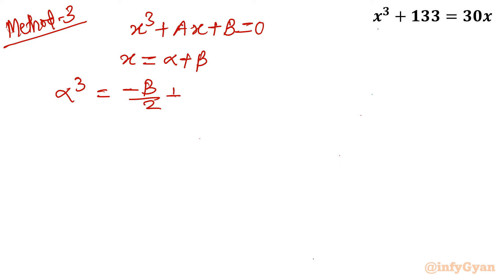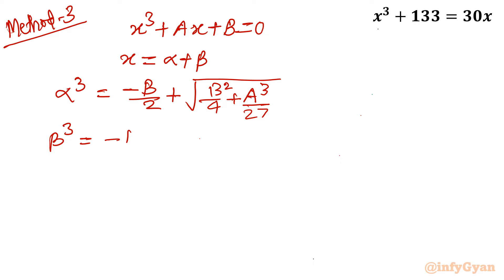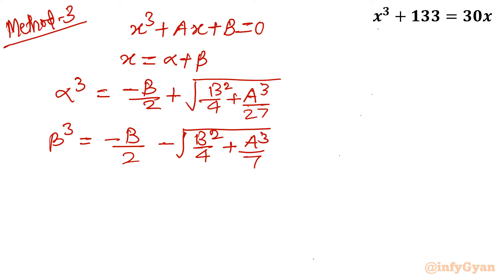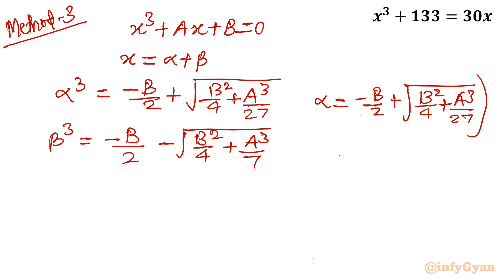And beta cubed equals minus b over 2, minus the square root of b squared over 4 plus a cubed over 27. From these we take the cube root of the right-hand side. So alpha equals the cube root of: minus b over 2 plus square root of b squared over 4 plus a cubed over 27 — whole to the power 1 over 3. Similarly, beta uses the minus sign instead.